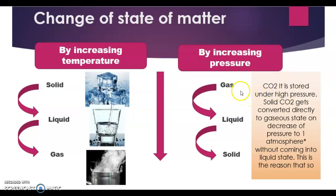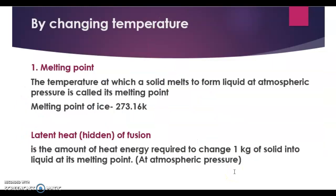Carbon dioxide gas under high pressure directly converts into solid without passing through the liquid phase — this solid form of carbon dioxide is called dry ice. The melting point is the temperature at which a solid melts to form a liquid at atmospheric pressure. The melting point of ice is 273.16 Kelvin. The melting point of a solid also indicates the strength of the force of attraction between its particles.